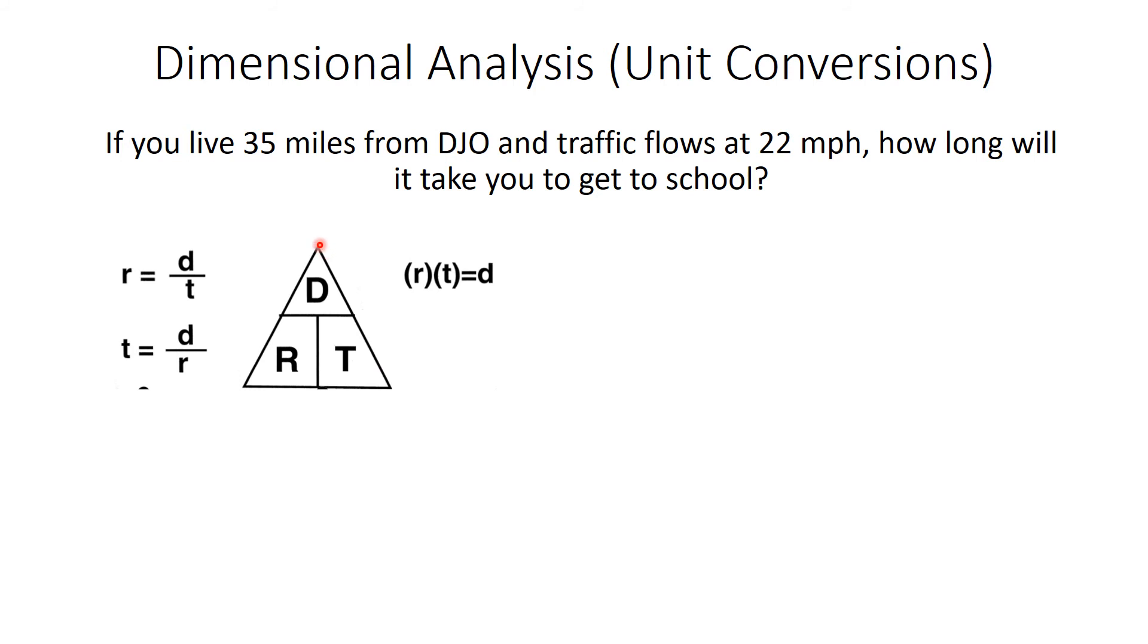You can make this pyramid. Write D over here, distance, rate, R over here, and time, T over here. And if you just understand this line to mean divide and this vertical line here to be multiply, if you just cover up the variable that you're looking for, you generate all these three equations.